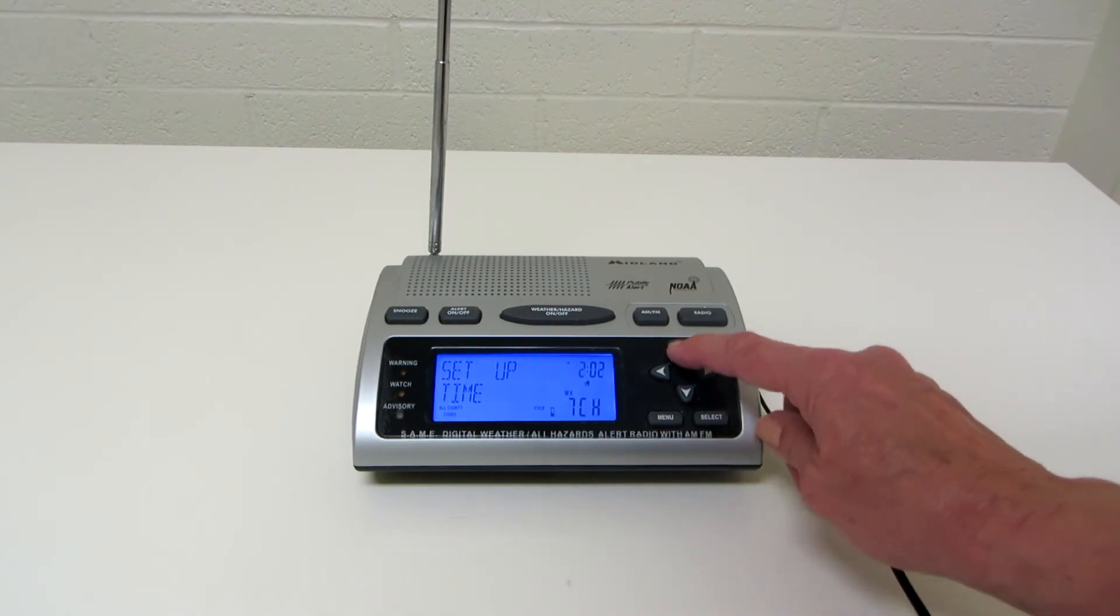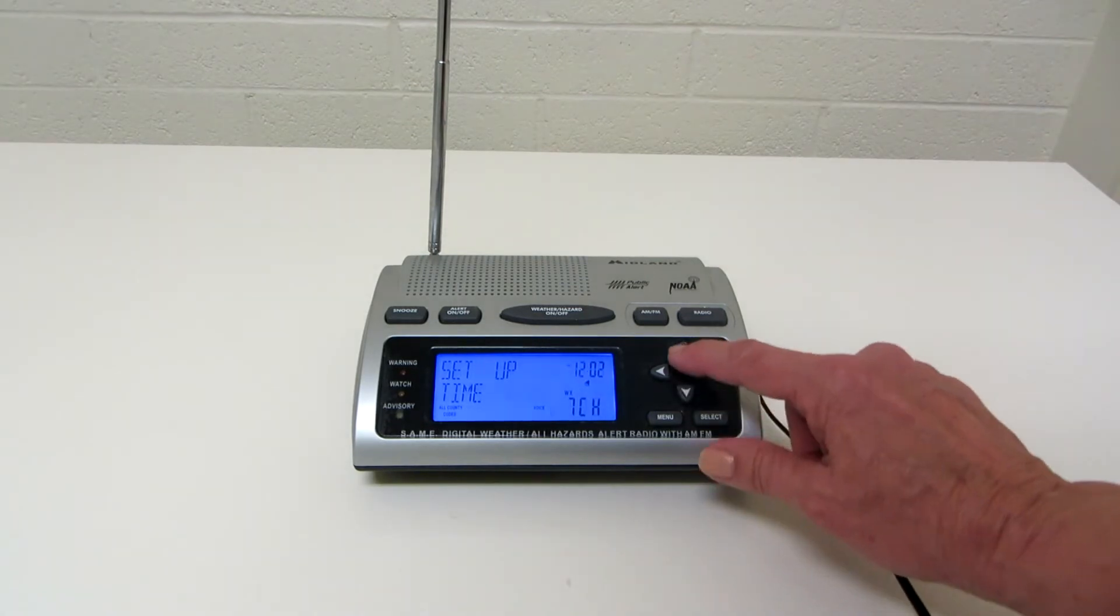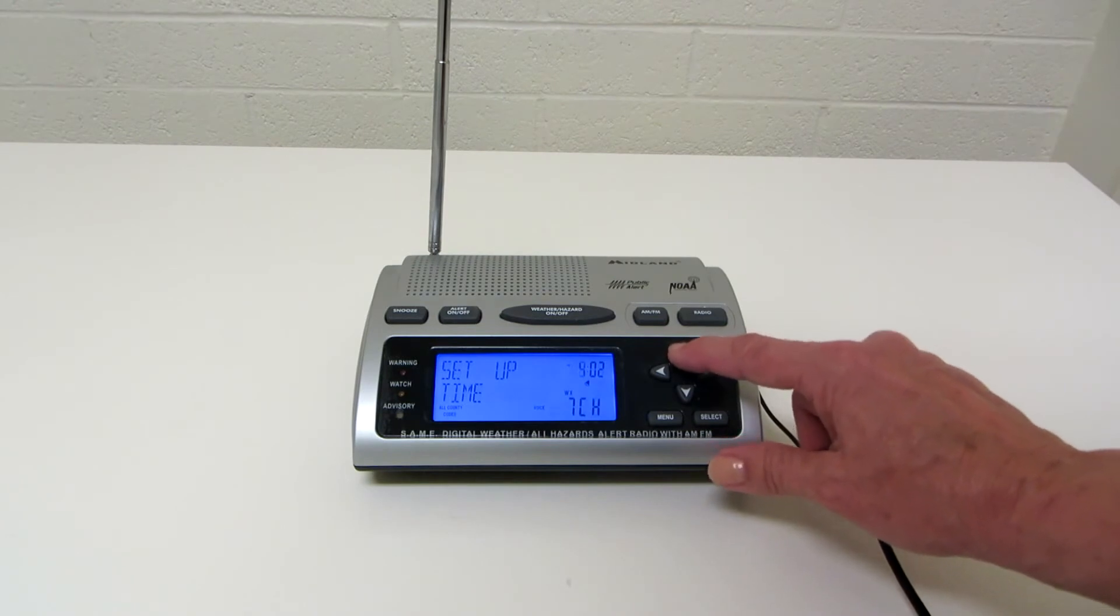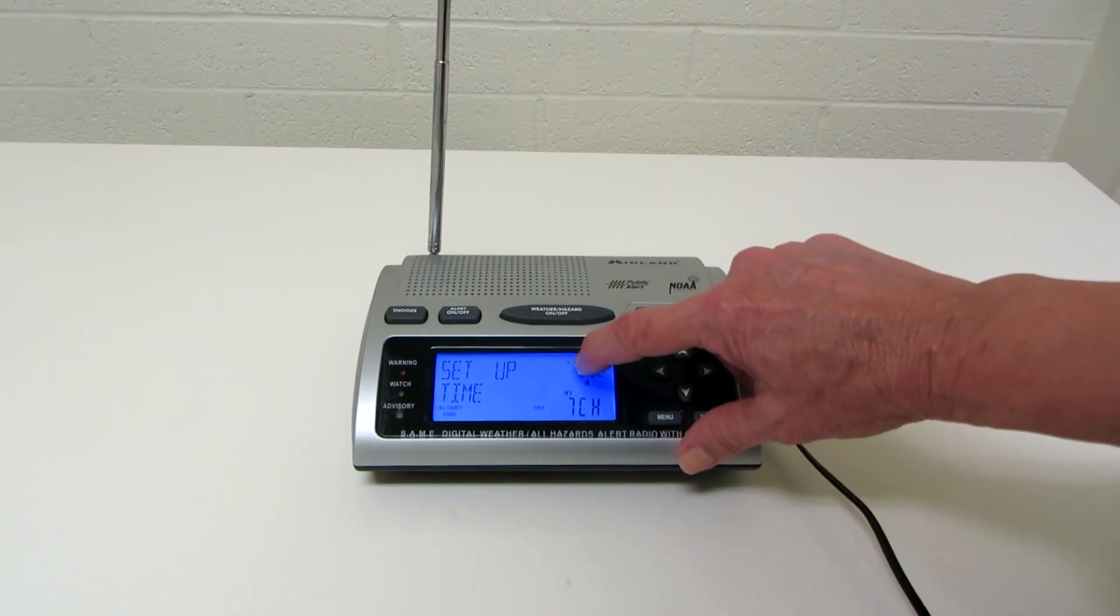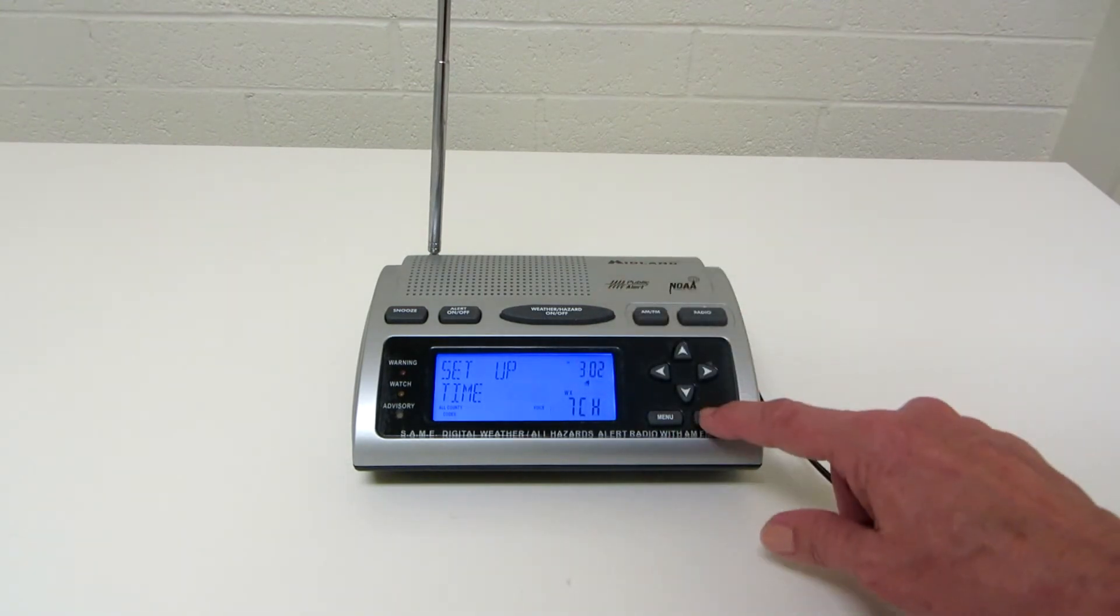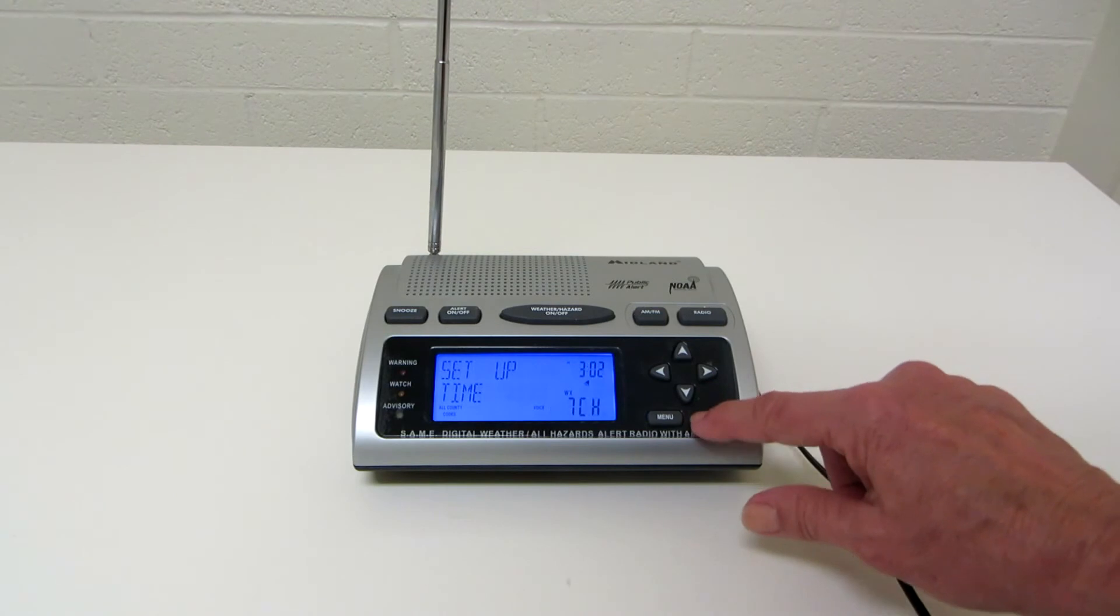You would toggle up or down to set the time where you want it, AM or PM. Then you just have to pay attention to that, especially if you're setting the alarm. Make sure you see the little AM/PM and you get it correctly on there.